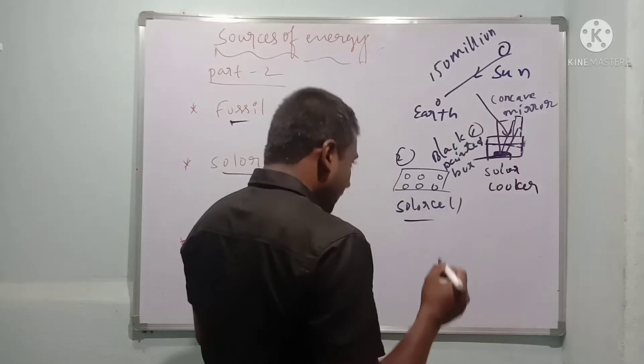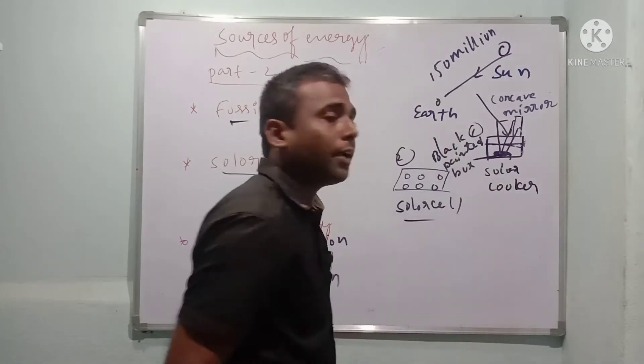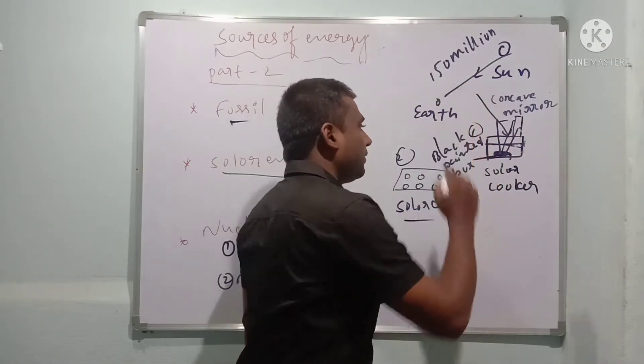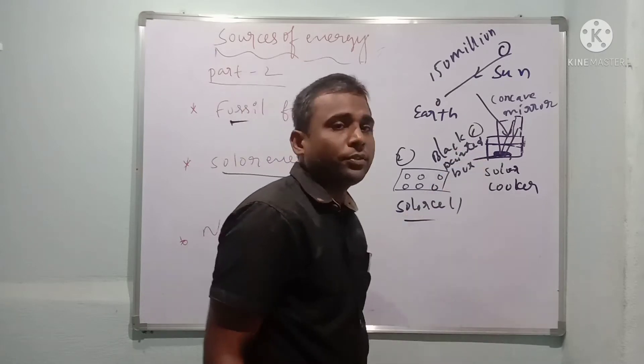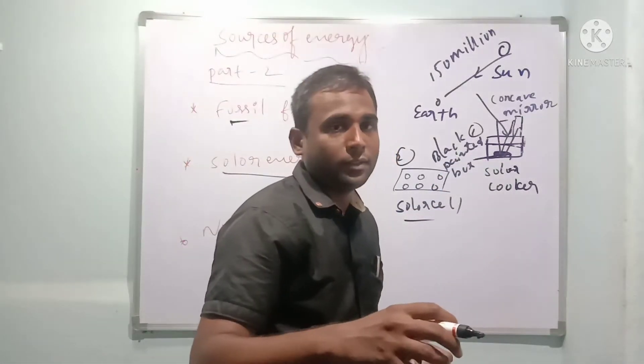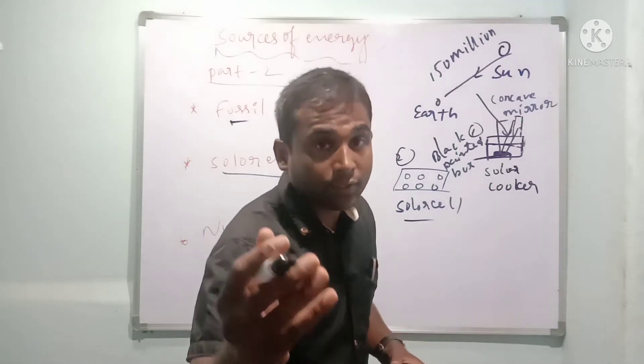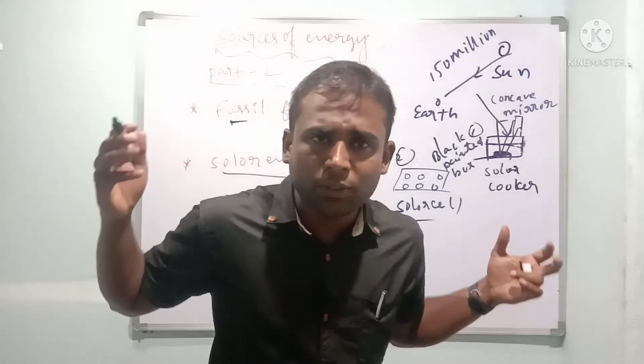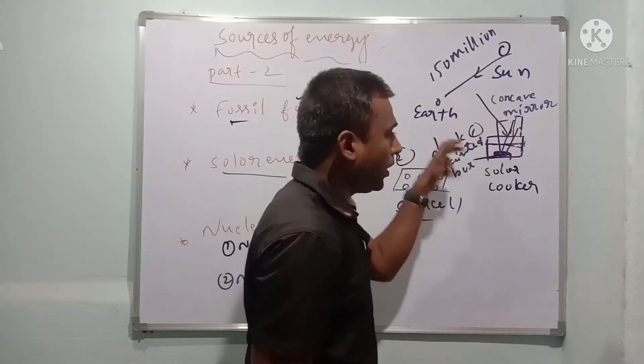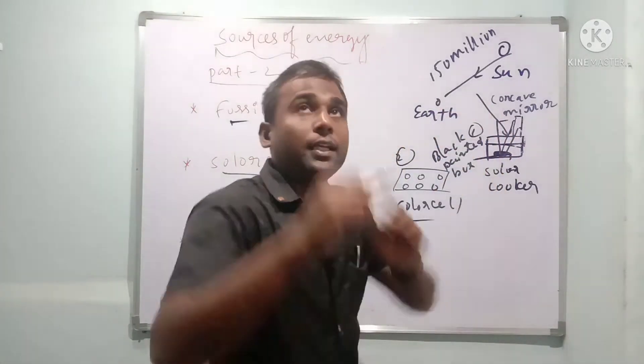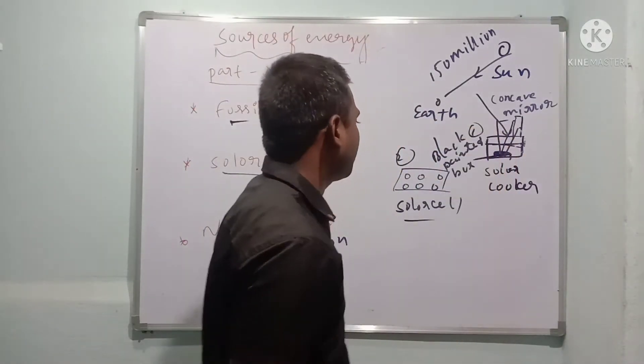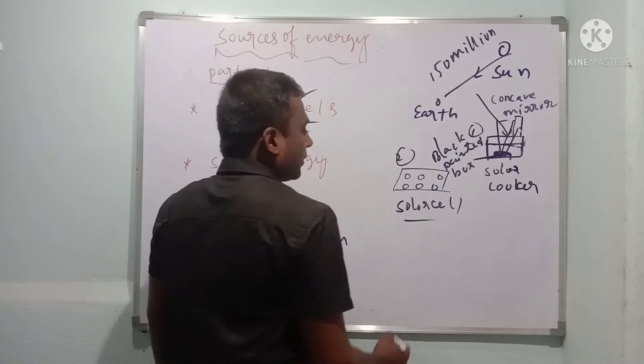Why did we prefer black color? Because it is a good absorber and emitter. This is about solar cooker. It has some disadvantages - we can't use it always, only when sunlight falls. We can't use it during nighttime, rainy time, or cloudy climate. We should keep changing the position of the cooker wherever sunlight falls.